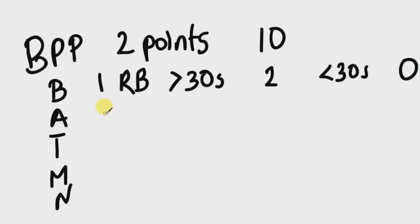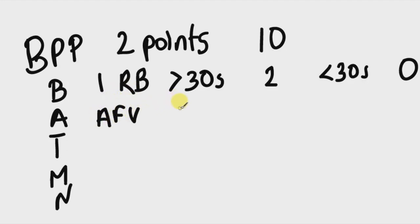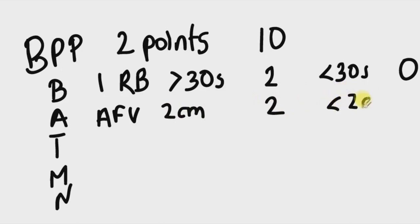For amniotic fluid volume, a pocket of amniotic fluid that measures at least two centimeters in two planes perpendicular to each other — a 2×2 cm pocket — gets a score of two. A score of zero is assigned if the largest single vertical pocket is less than two centimeters.